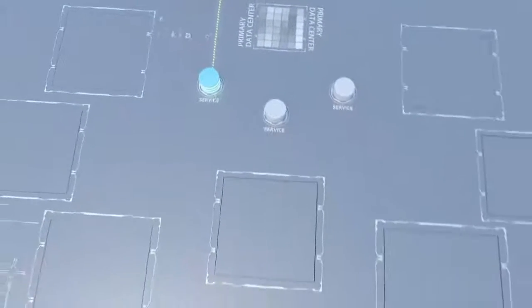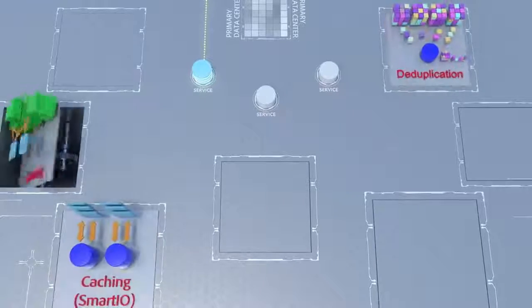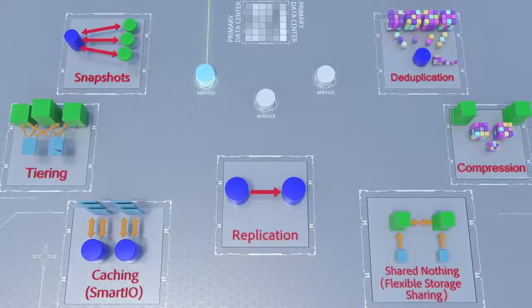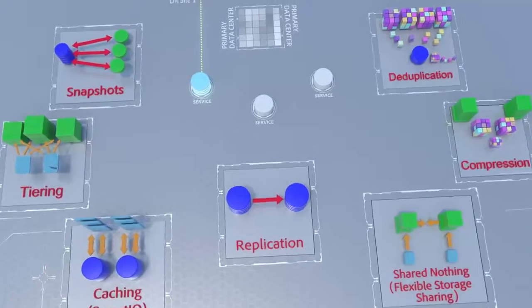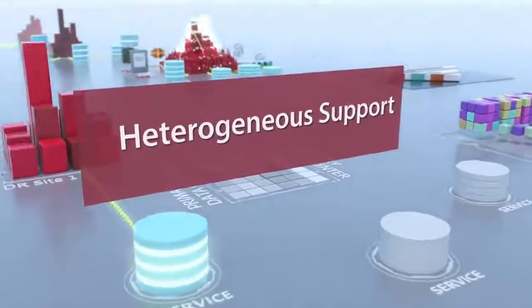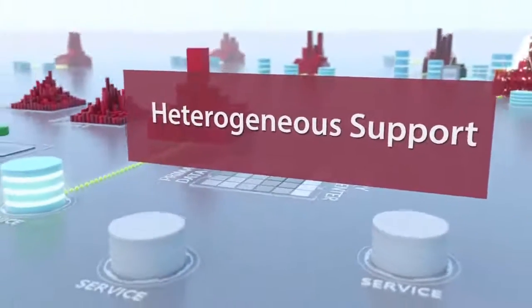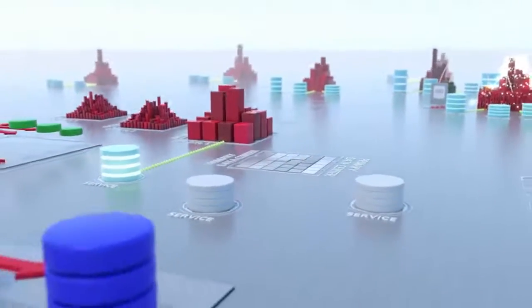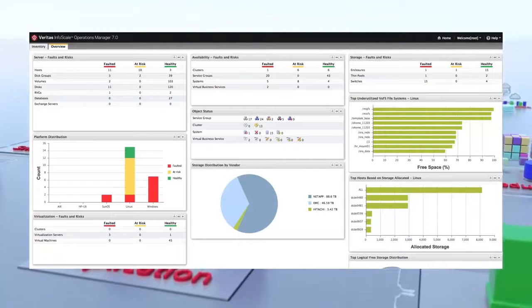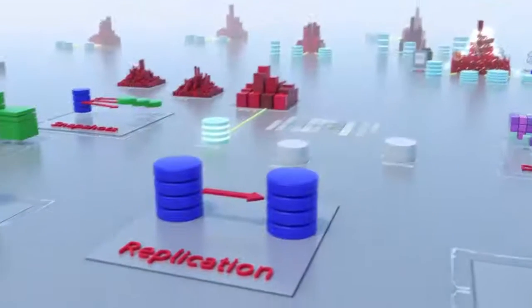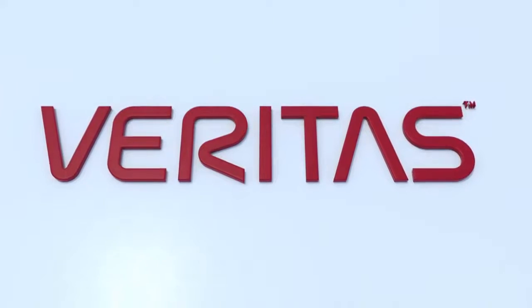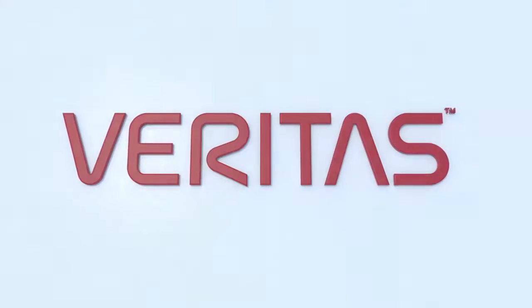Veritas InfoScale storage solutions help ensure your business applications and information are managed effectively based on performance, availability, and cost requirements. InfoScale supports a wide range of storage platforms, protocols, and operating systems. With Veritas InfoScale Operations Manager, you can easily manage all your storage management and availability needs through a single console. With Veritas InfoScale solutions, you can realize required business continuity and right-for-application storage. Visit Veritas InfoScale.com.